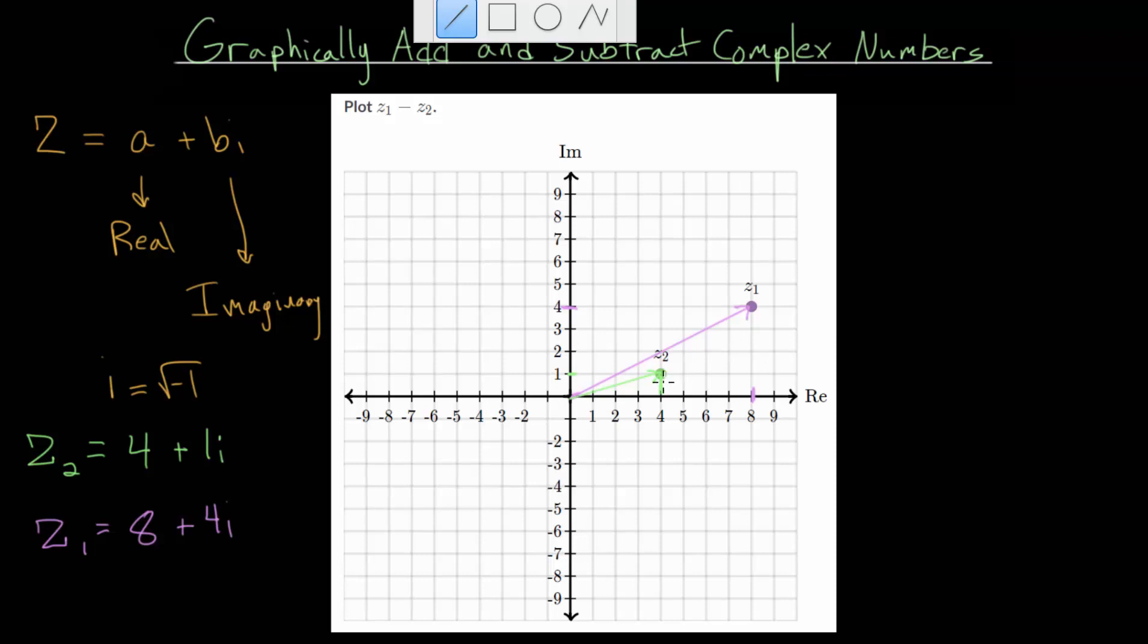And finding the opposite of the vector, essentially what you can imagine doing is rotating it 180 degrees so that it would basically be over here. Or another way to look at it is that we're going to make both the real part and the imaginary part negative, since we're just taking the opposite of this vector here. And the opposite of 4 will bring us to minus 4. The opposite of 1 brings us to negative 1. So this new vector, the opposite of z2 will be right there.